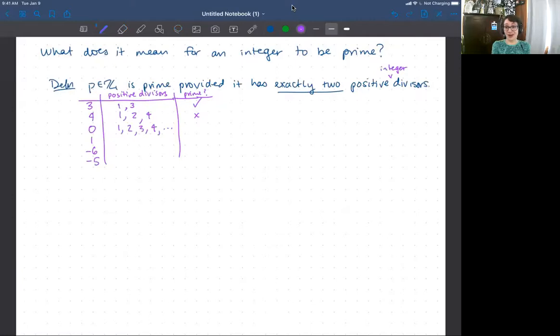How about one? Positive divisors of one. There is only one. Is one exactly two? It is not. So one is not prime.